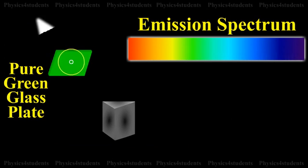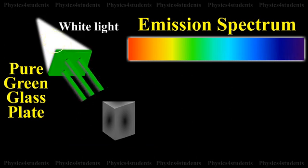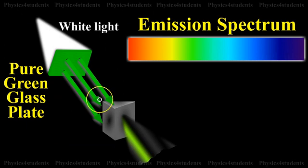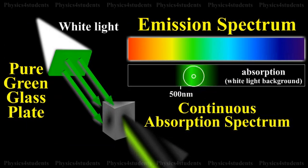Continuous Absorption Spectrum: A pure green glass plate, when placed in the path of white light, absorbs everything except green and gives a continuous absorption spectrum.